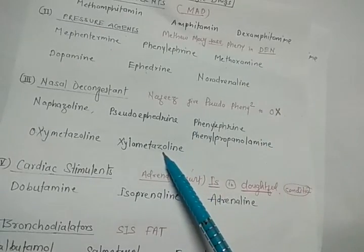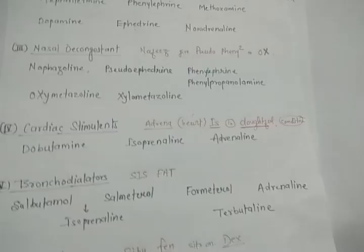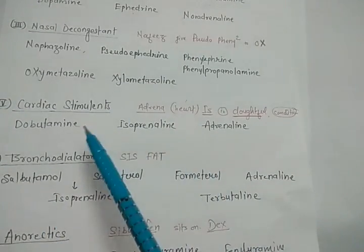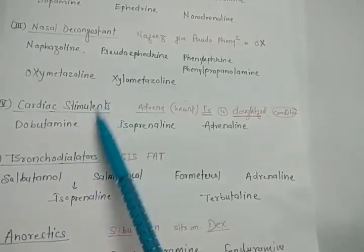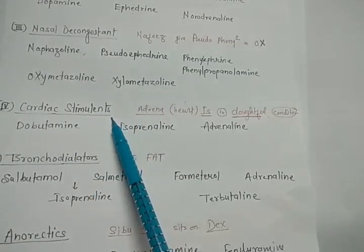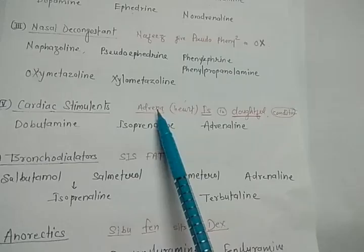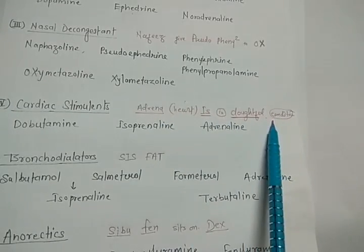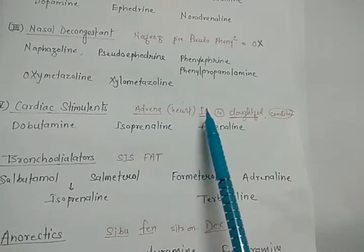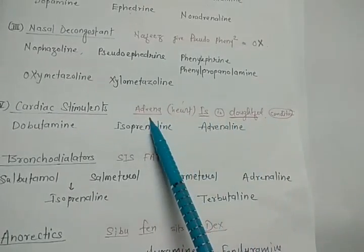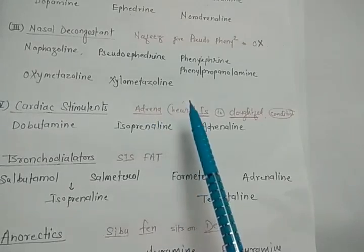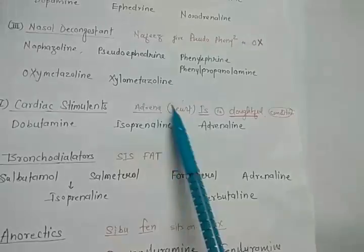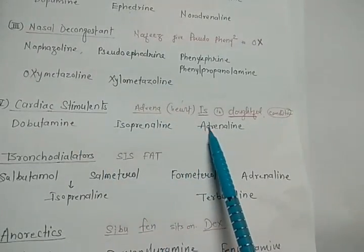For cardiac stimulant, the trick is: 'Adrenal heart is in doubtful condition.' Heart correlates with cardiac; adrenal = adrenaline; heart = isoprenaline (using the 'is' sound); doubtful = dobutamine.